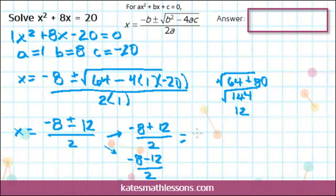You're going to simplify the numerators next. Negative 8 plus 12 is 4, and always divide last. 4 divided by 2 is 2. So one of our answers is 2, x equals 2.